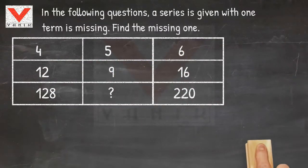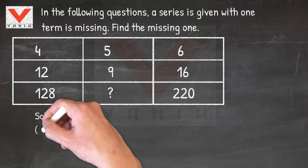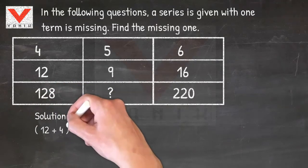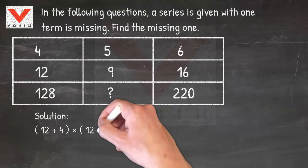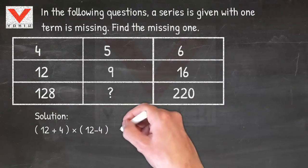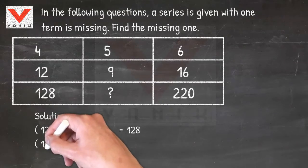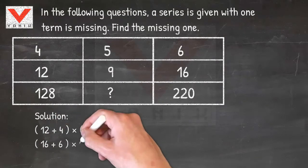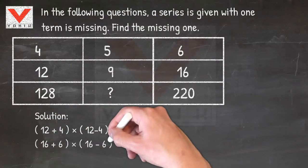Solution? In the first column, multiplication of (12 plus 4) and (12 minus 4) gives us 128. In the third column, multiplication of (16 plus 6) and (16 minus 6) gives us 220.